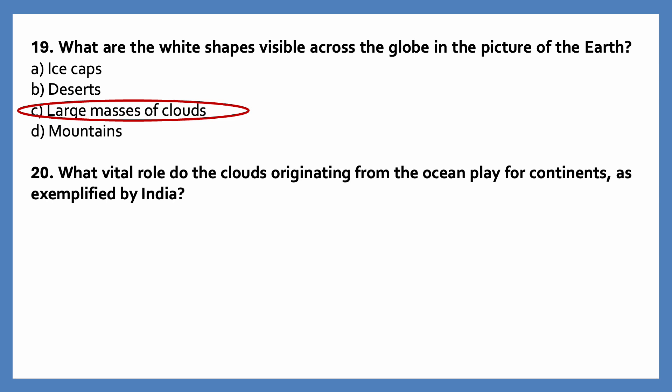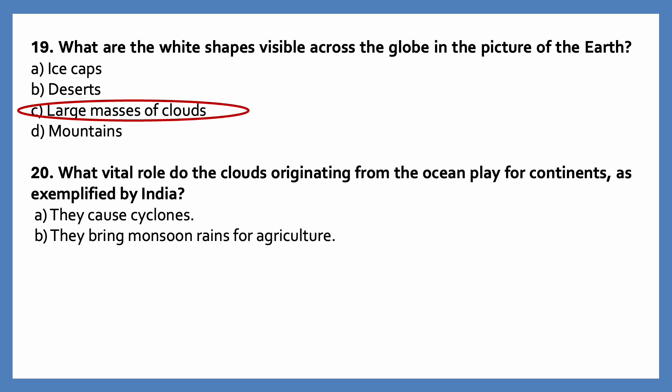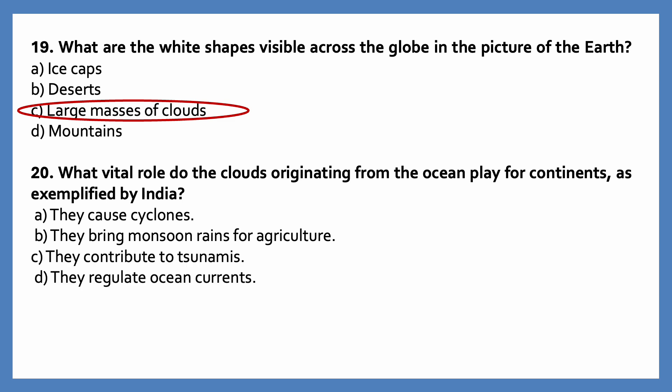What vital role do the clouds originating from the ocean play for continents, as exemplified by India? Options are: they cause cyclones; they bring monsoon rains for agriculture; they contribute to tsunamis; they regulate ocean currents. The correct answer is they bring monsoon rains for agriculture. The clouds originating from the ocean play an important role in bringing monsoon rains for agriculture in India.